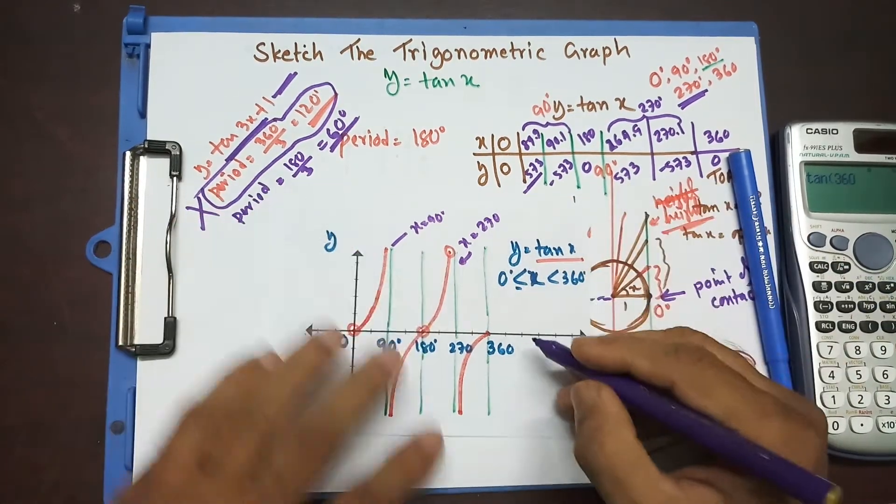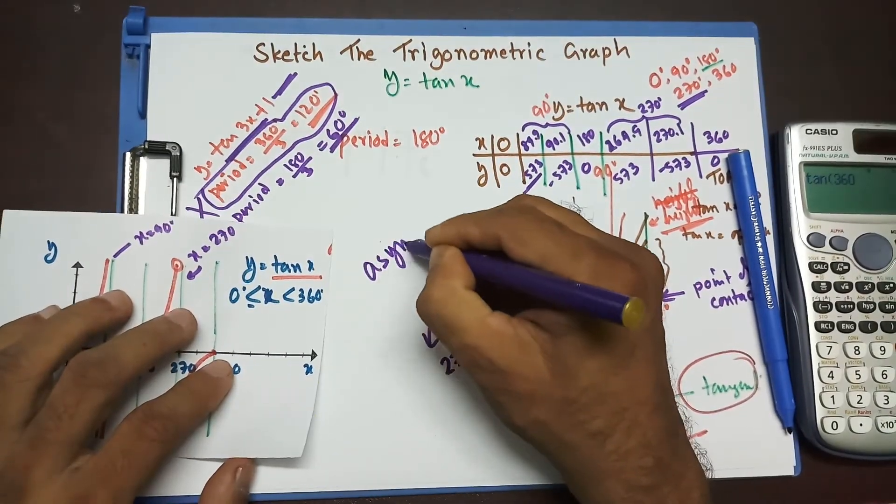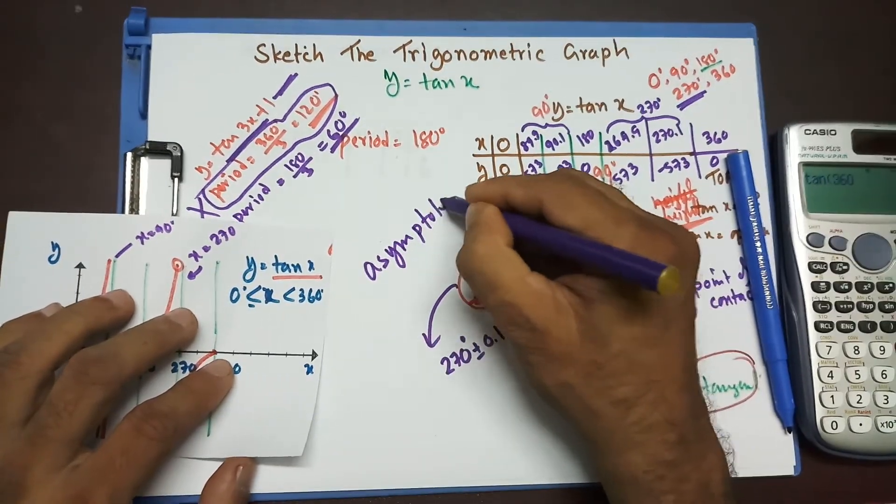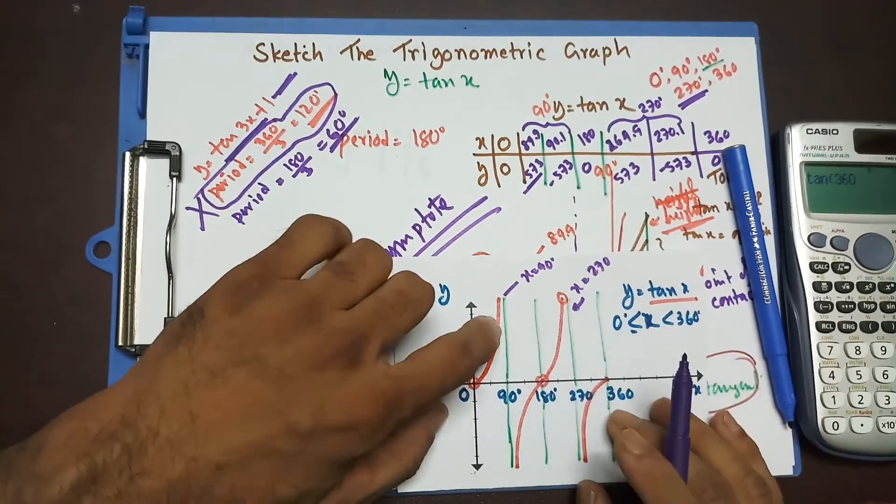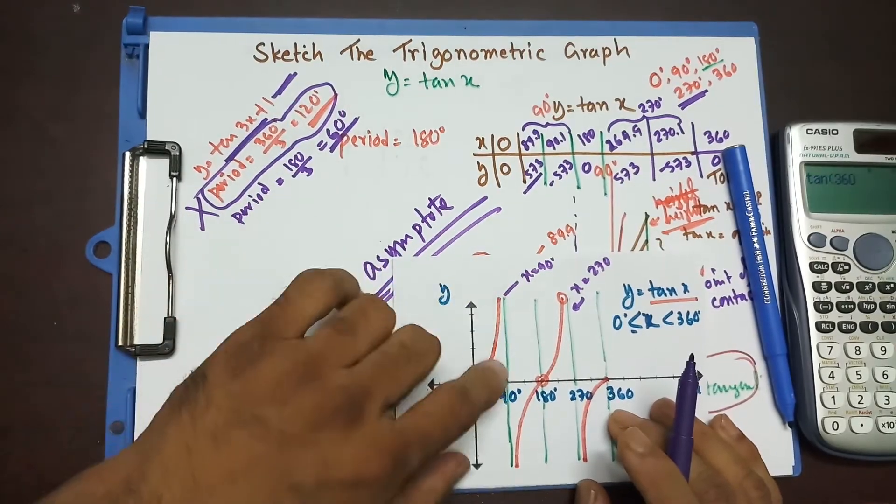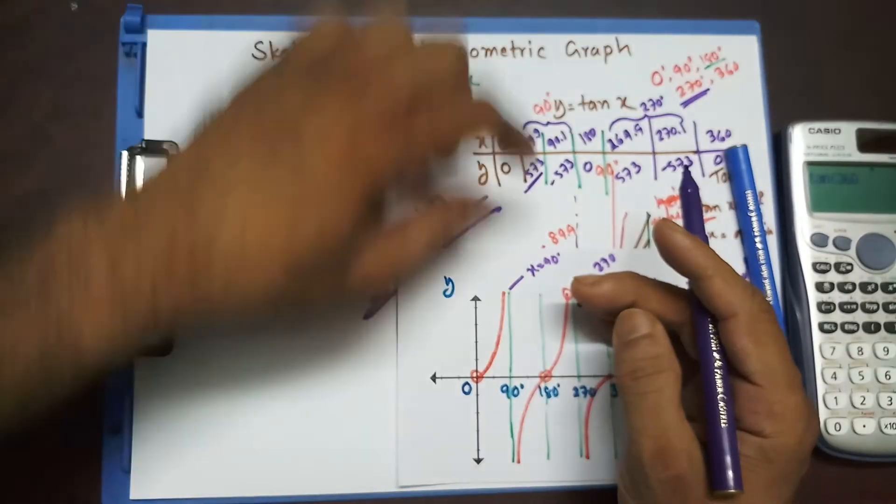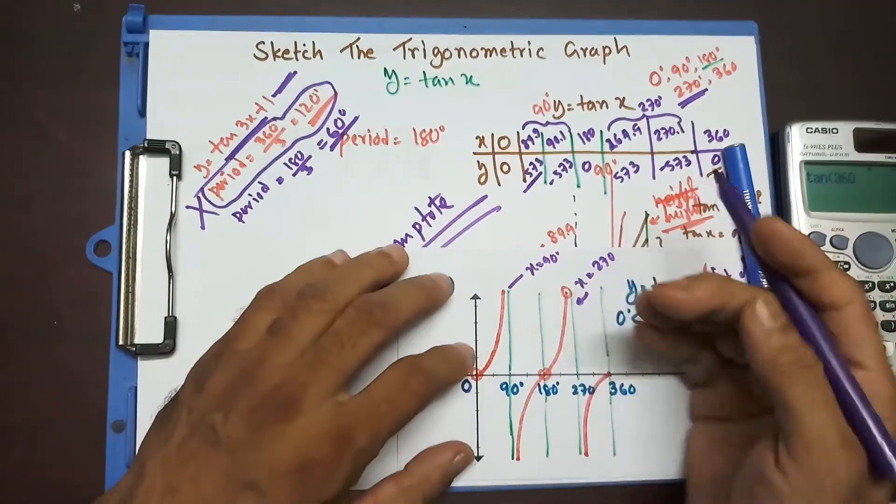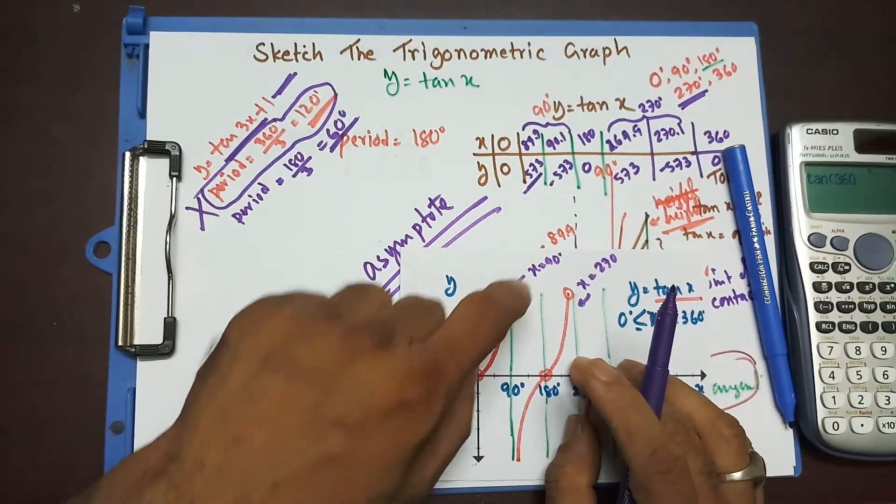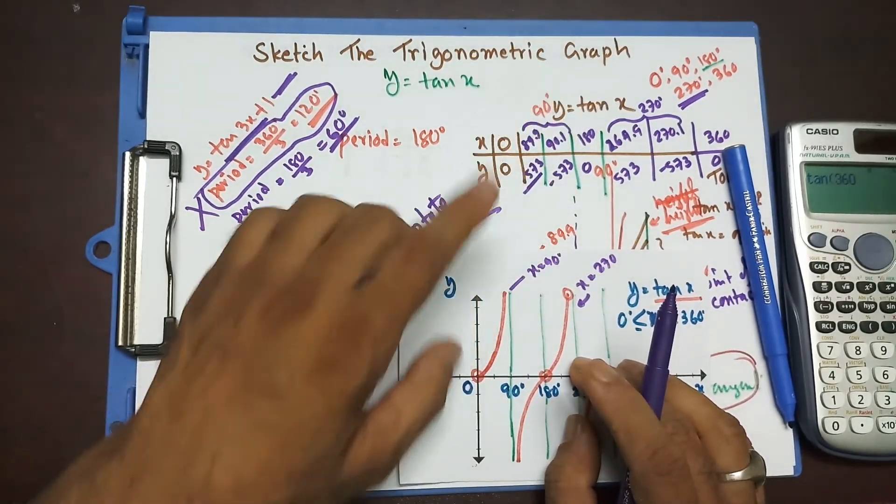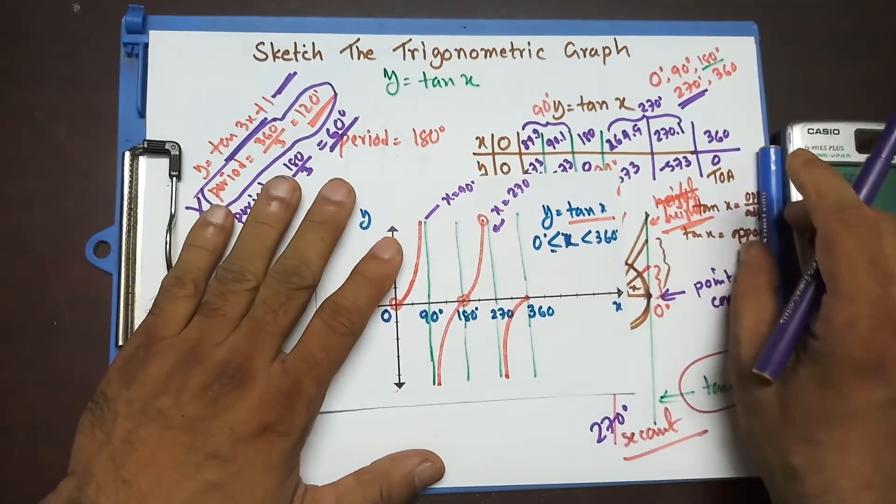What this asymptote line means is that this graph will go really close to that, so close that it may seem like along the line up there somewhere, they're going to meet, but they don't. They're going to go really close to this line, but they are never going to intersect that line or pass through that line. So, this is our asymptote. And this is our tan x graph.